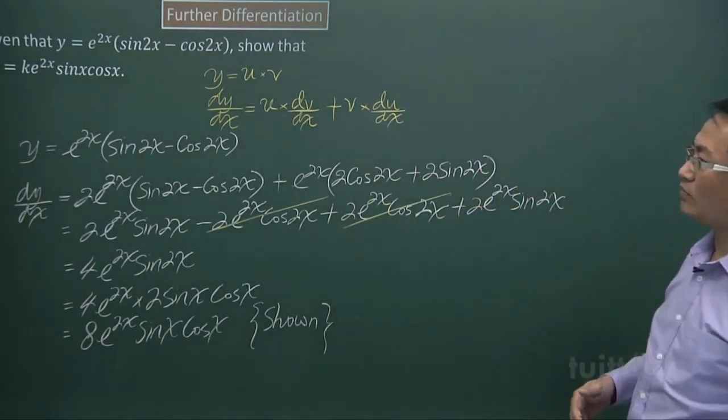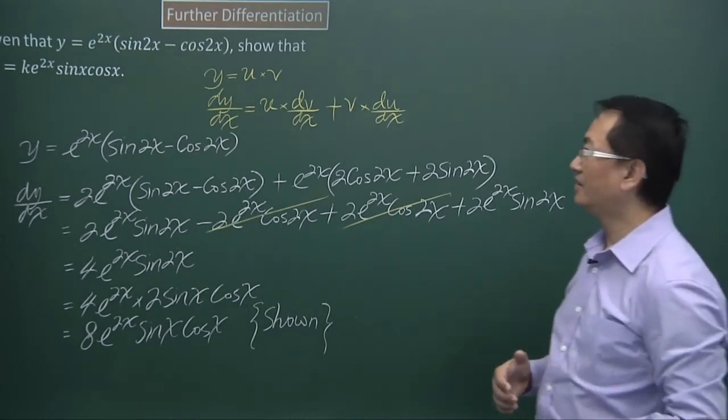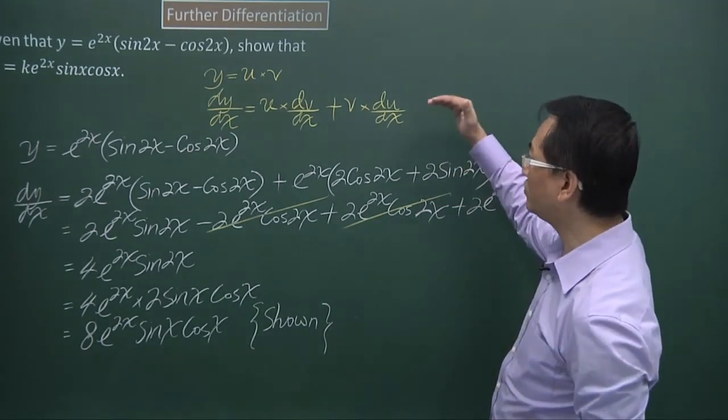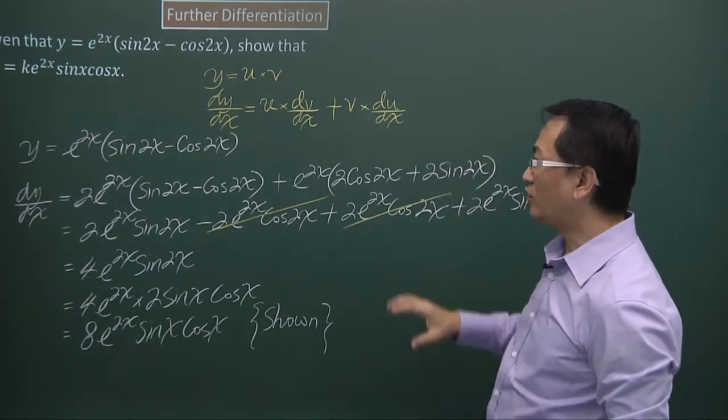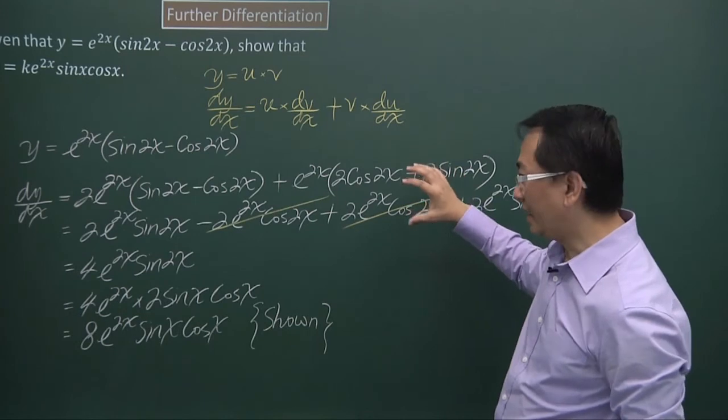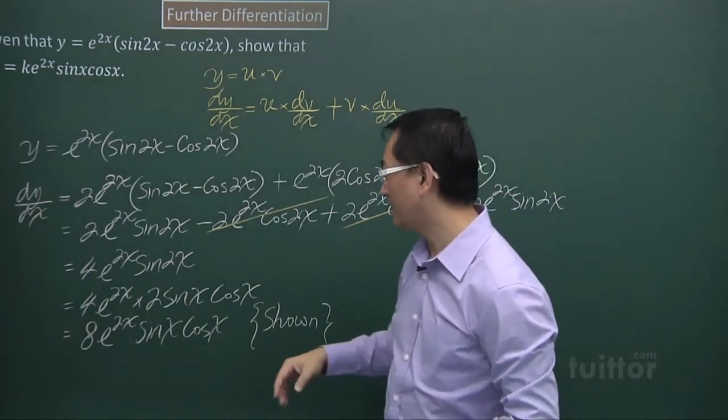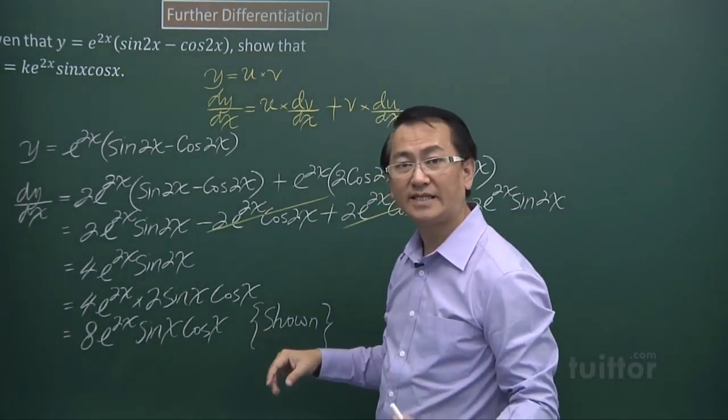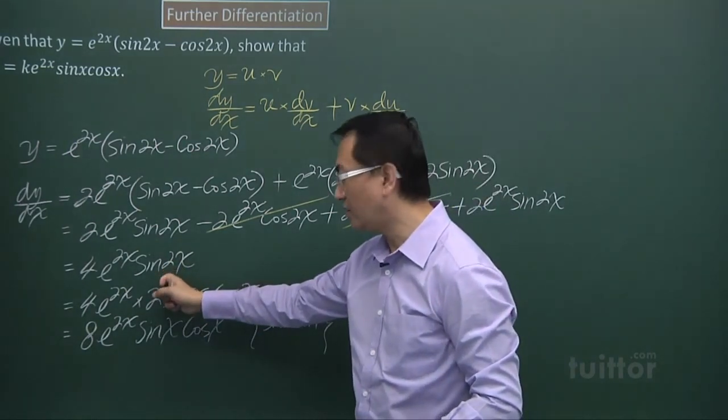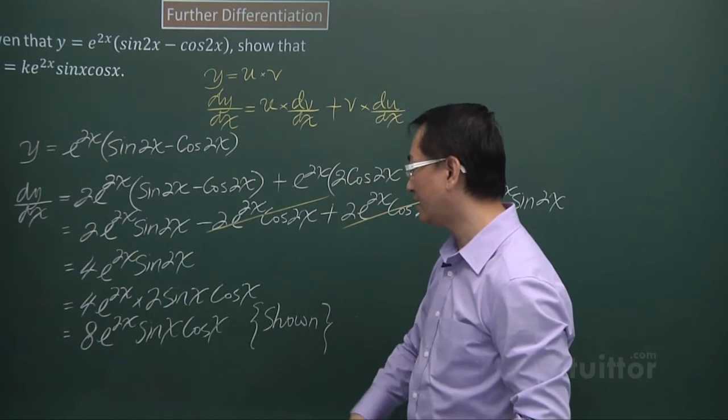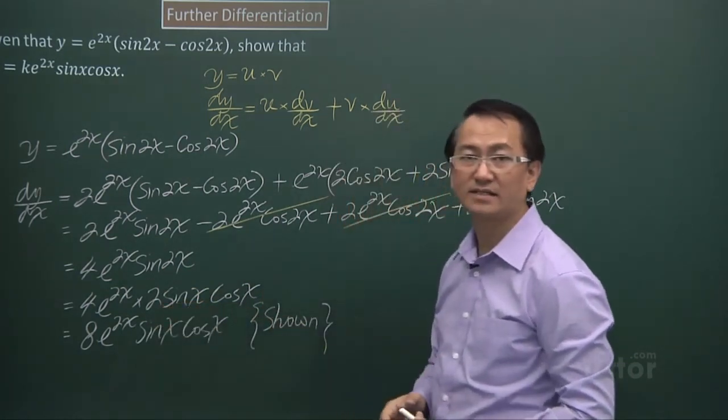So what we need to have learned is the use of the product rule of differentiation and to really apply it correctly. Next is also the identities of trigonometry, like here where we have sine 2x, it should give us 2 sine x cos x.